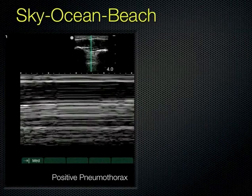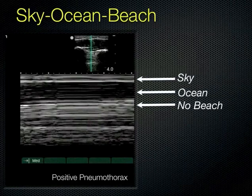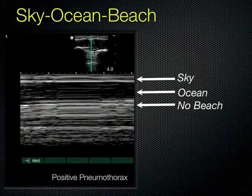In your models today, nobody will likely have a pneumothorax, but if you ask them to hold their breath very carefully during M-mode, get Sky Ocean Beach first, then ask them to hold completely still, and you'll be able to see the stratosphere sign and barcode — because if the lung's not moving, you won't get that graininess.